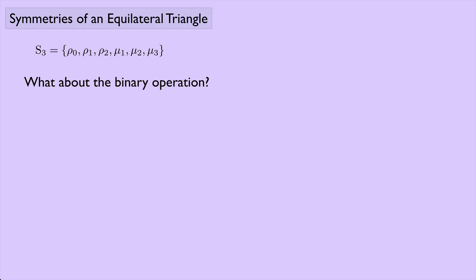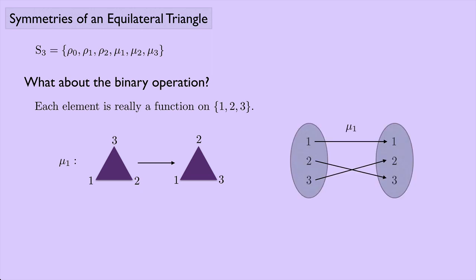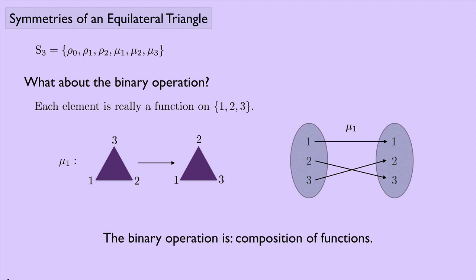What about the binary operation? Each of these elements can be thought of as a function on the set {1, 2, 3}. For example, μ₁ sends 1 to 1, 2 to 3, and 3 to 2. Since we have functions, we can combine them using function composition. So the binary operation we're going to use is function composition.